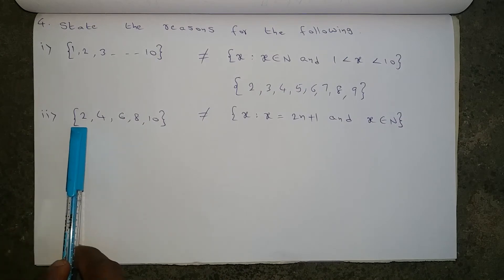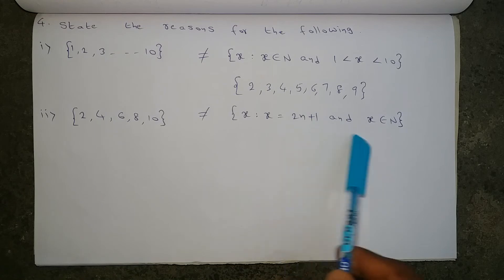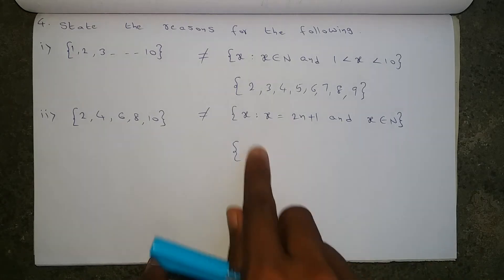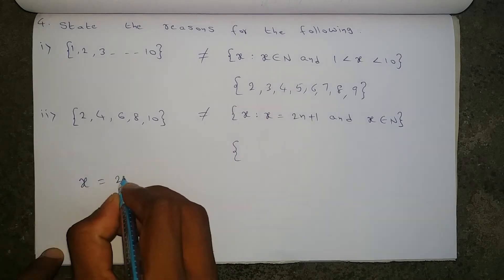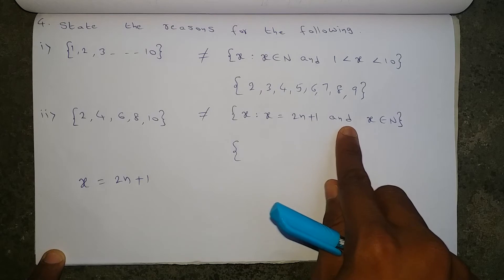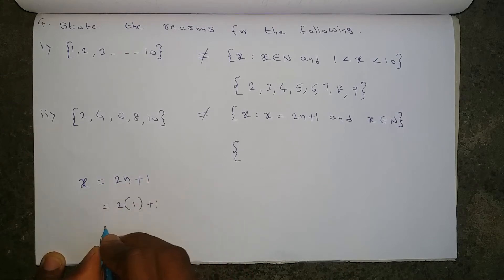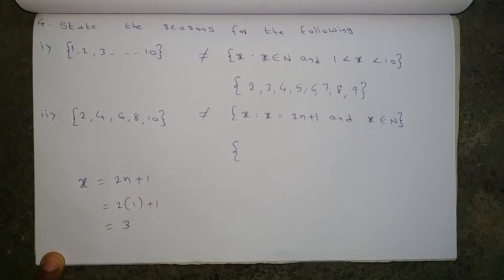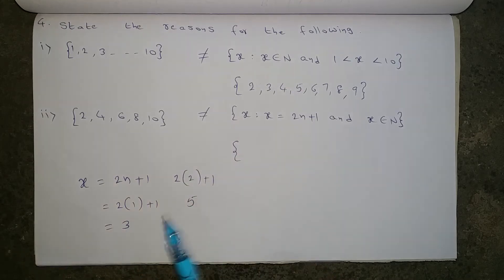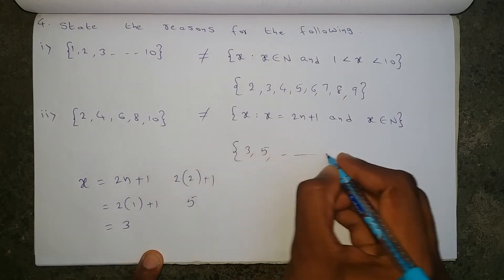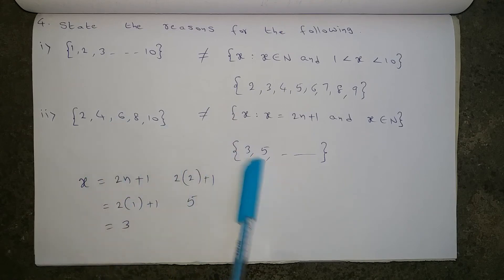Next, the first set has five elements {2, 4, 6, 8, 10} which are all even numbers. The second set is X such that X equals 2N + 1 and X belongs to natural numbers. Substituting N = 1: 2(1) + 1 = 3. Substituting N = 2: 2(2) + 1 = 5. So the second set gives {3, 5, ...} which are odd numbers. The first set contains even numbers but the second set contains odd numbers, so these two sets are completely not equal.